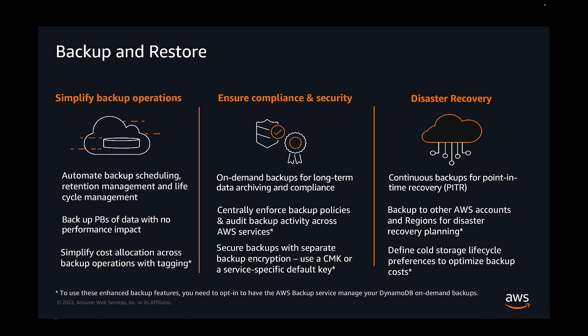In addition to on-demand backups, you can also enable continuous backups for point-in-time recovery. This gives you the ability to restore to any point in time within the last 35 days, at per-second level granularity. All backups are automatically encrypted, catalogued, easily discoverable, and retained until you explicitly delete them. You can execute backup and restore operations with a single click in the AWS Management Console, or with a single API call using any of our SDKs.